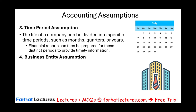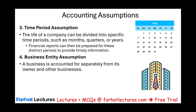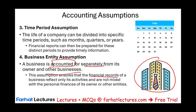Another assumption is the business entity assumption. This means the business itself is accounted for separately from its owners or other businesses — each business is standalone, even separate from its investors and owners. This assumption ensures that the financial records of the business reflect only its activities and are not mixed up with the personal finances of the owners or other entities. Each business is reported separately from other businesses and from its owners. A business can be a sole proprietorship, a corporation, an LLC, or an LLP — but each is accounted for separately.